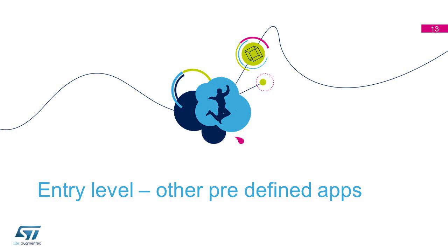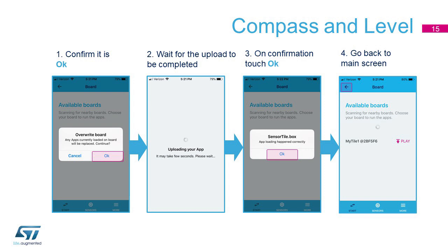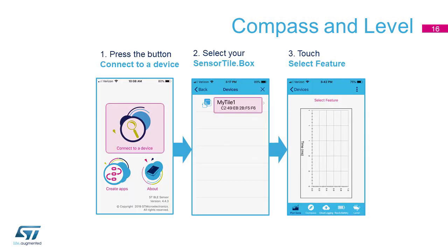Let's see some other app examples. Let's try the second one, Compass and Level. From the main screen, hit Create Apps, and then from the main Start menu, select Compass and Level. When the app screen opens, hit the pink Play button. Your SensorTile.Box name should appear as Available Boards. If not, go back one screen and try again. When prompted to overwrite the board, hit OK. If the upload happens successfully, you can go back to the main screen, where you can connect to your SensorTile.Box to see data in real time.